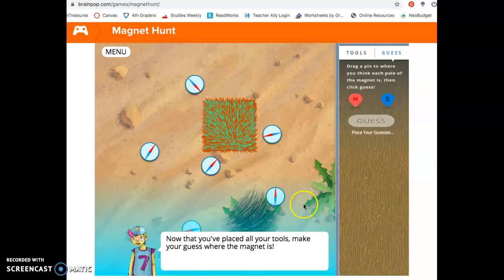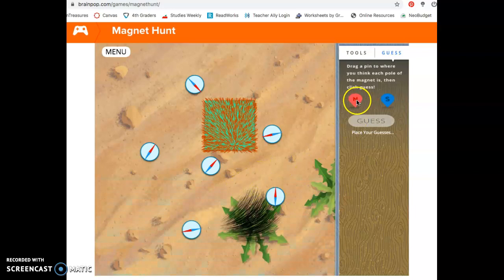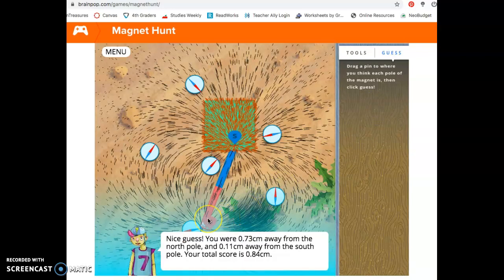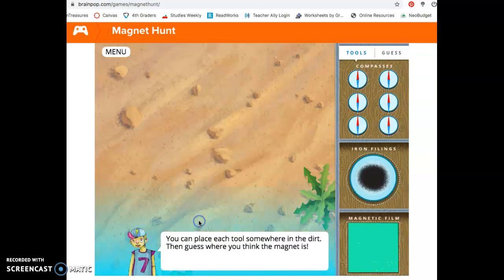Looks like... Oh boy. North... Well, I know the South Pole is going to be right there. And it looks like the North Pole is going to be somewhere around here. I don't know. It could be totally wrong. Oh, yay! I was really close. Okay. We were pretty close to the North Pole. Even closer to the South Pole. Your total score is 0.84 centimeters. So, they added together our two distances. So, we want this number down here to be as small as possible. Let's try that again.